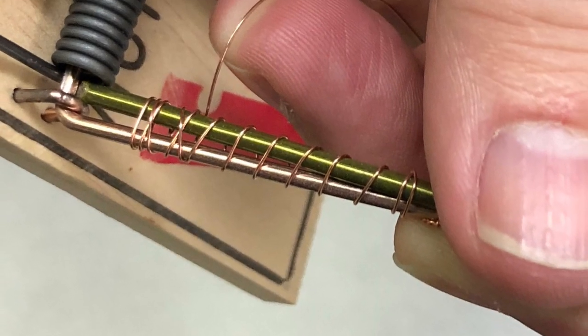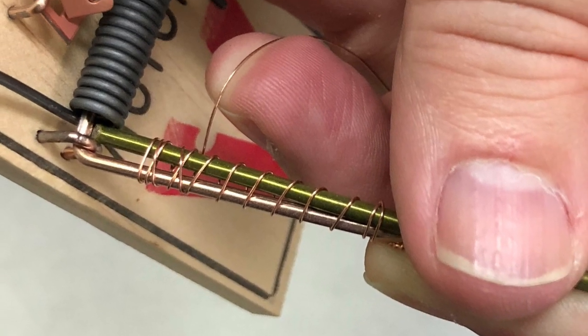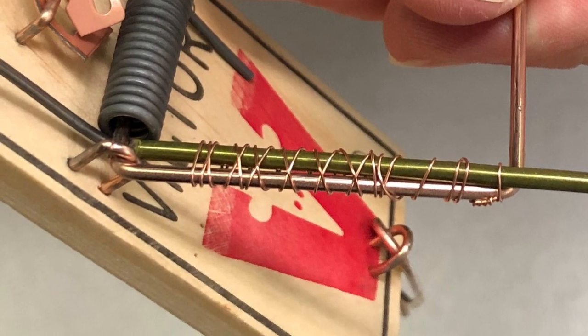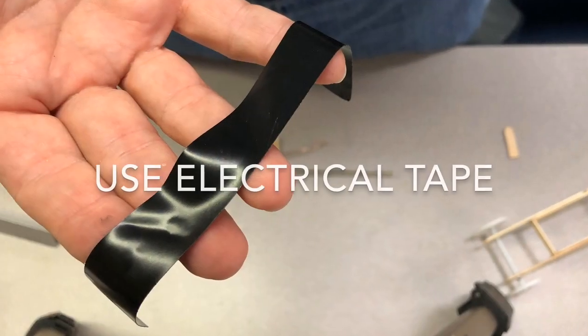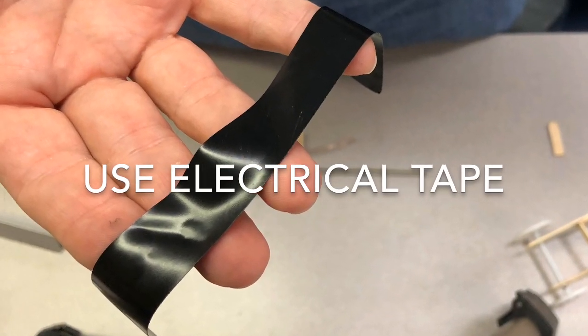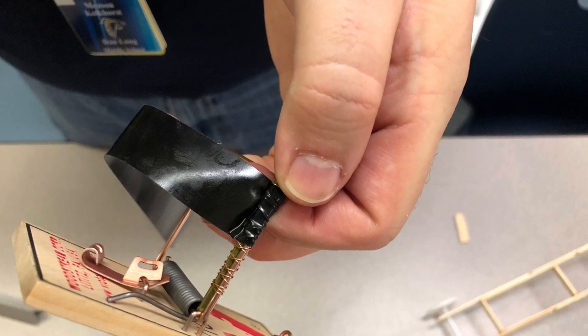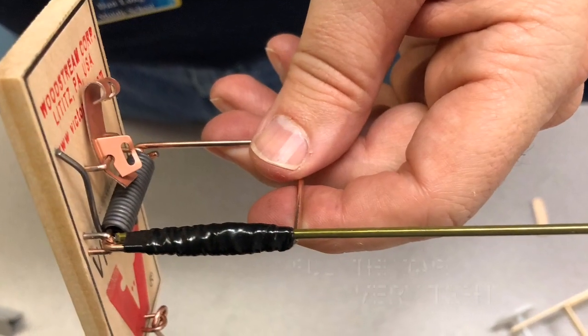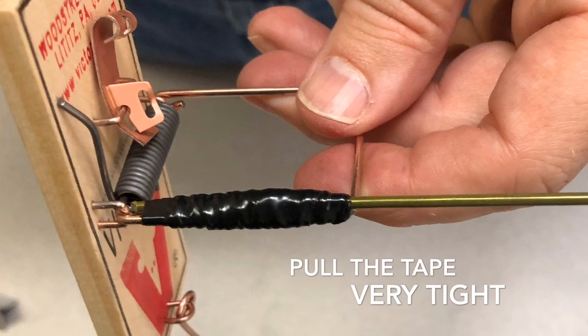Use electrical tape to make sure that the wire doesn't move. Pull it as tight as you can, and that will help make it so the wire can't move.